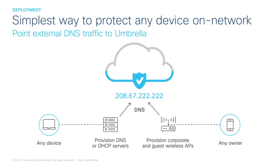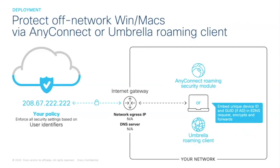For off-network coverage, if you use Cisco AnyConnect already at version 4.3 or later, there's no additional endpoint agent to deploy. All you have to do is enable the Umbrella Roaming Security Module. The module ensures that whenever the user is disconnected from the corporate network, those requests are still going to the Umbrella cloud for inspection. You can also set up different policies for users depending on whether they are on or off the network. If you don't use AnyConnect, we have a lightweight client called the Umbrella Roaming Client that works alongside any VPN client you have, ensuring that DNS requests still go to Umbrella.